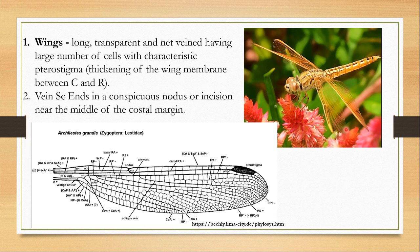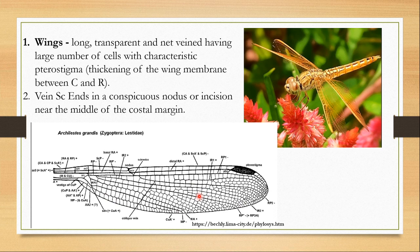The wings are long and transparent — they can be colored but are mostly transparent. If you look at the vein structure, they are known as net veins because the veins make a net-like structure. There are a large number of cells in Odonata wings; a cell is the area between two longitudinal and two horizontal veins, and it looks like a net.